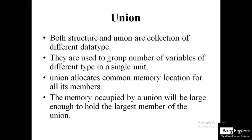In the case of union, the memory allocated is the memory of the largest member. With int a, float b, and char c, the largest member is float b, so the memory allocated to the union will be 4 bytes. This is the main difference between structure and union: structure uses the sum of all members' memory, while union uses only the largest member's memory.